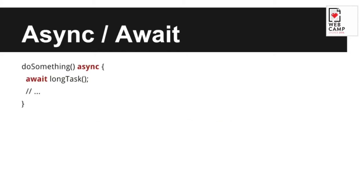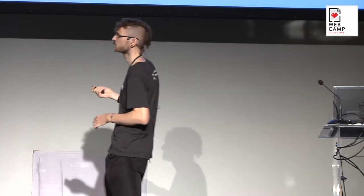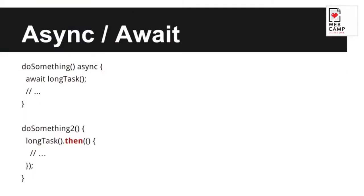I already mentioned async and await. If you're familiar with the concept, you'll recognize this. Essentially, you're waiting for a long asynchronous task — you don't know when it completes, but the code below only executes when it does. If you omit the await, execution continues and you can't be sure the task completed. You can also use .then() to say 'when the long task completes, then do something' and continue otherwise.